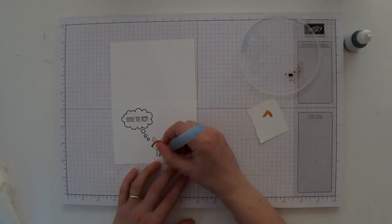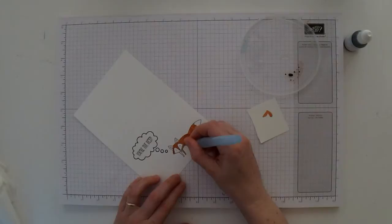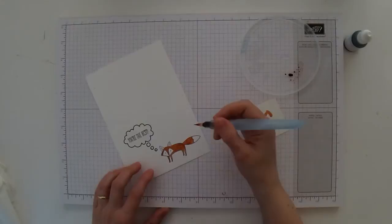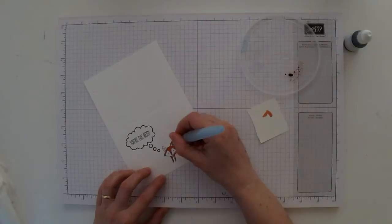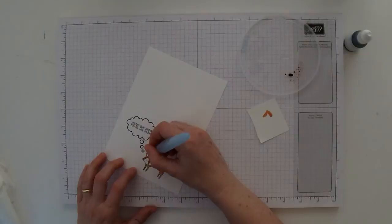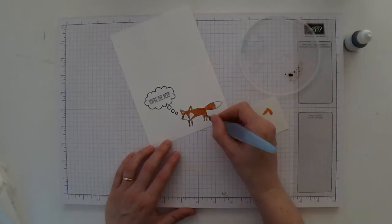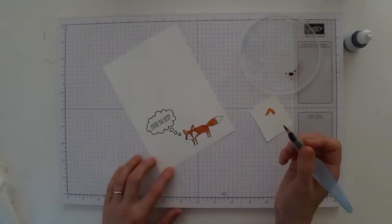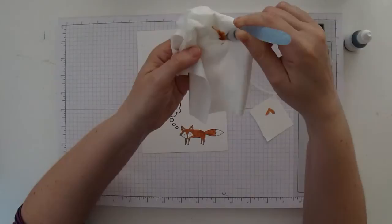The nice thing with using the reinkers is you do have control over how dark or light you can create your colors. With some other color mediums you're kind of stuck at the color that comes out of your pen. This one is fairly dark but that's okay. When it dries, it will blend a little bit more. Some of the lines will kind of just blend together. Now I'm just going to clean off this color and get rid of it off of my pen.